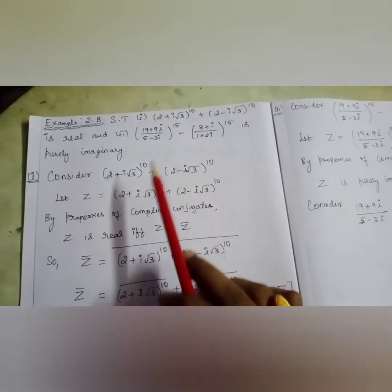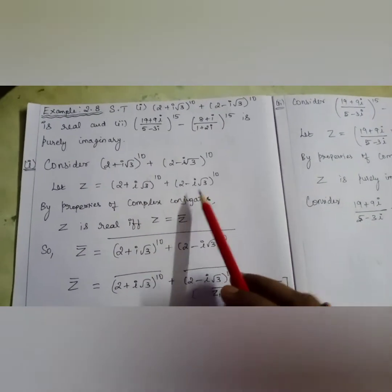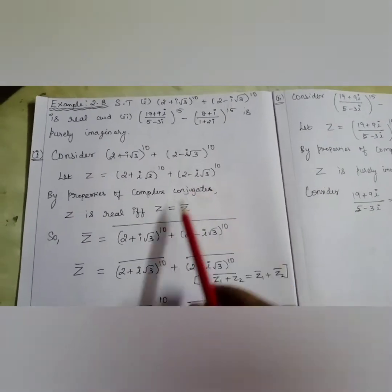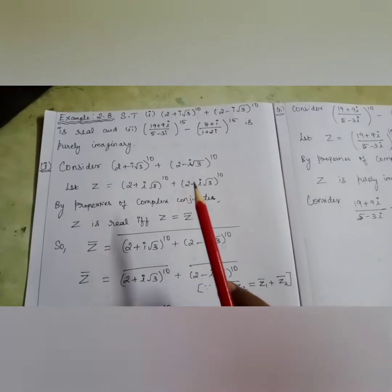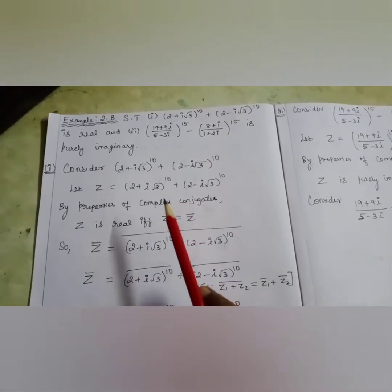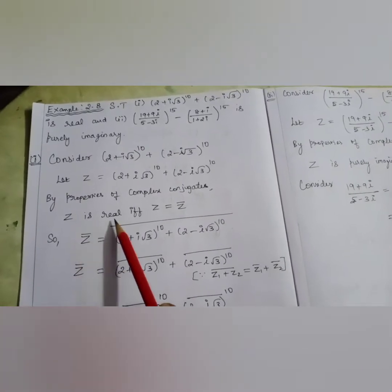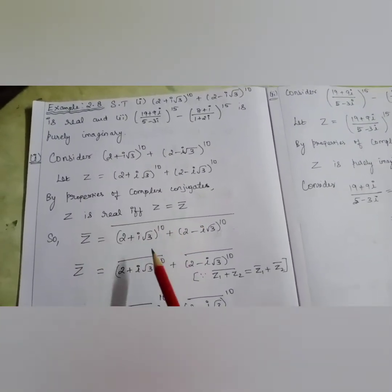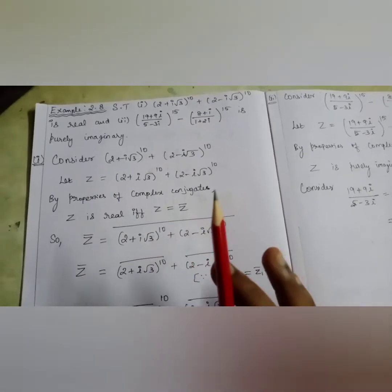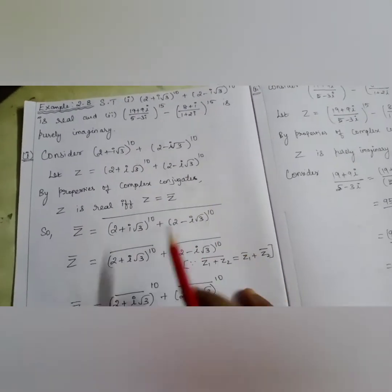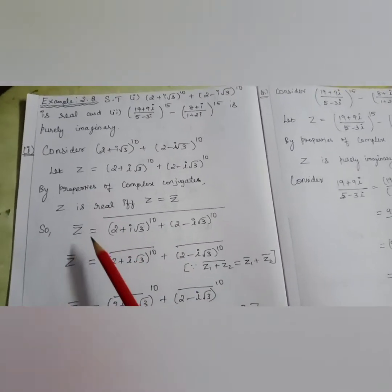Let z = (2 + i√3)^10 + (2 − i√3)^10. We just went through the properties — you have to go through them once again because we will be making use of them in the sums. This is one of the properties: z is real if and only if z = z̄. If I am able to prove that z = z̄, then z has to be real. So using that property, we will now start converting z as z̄.